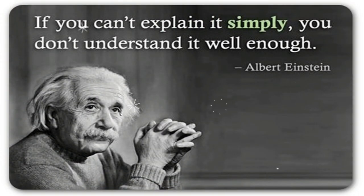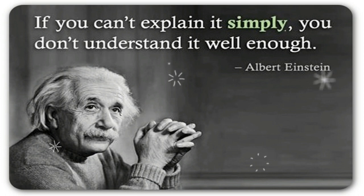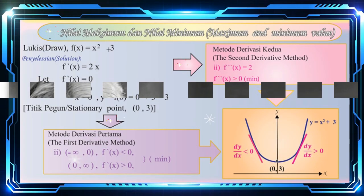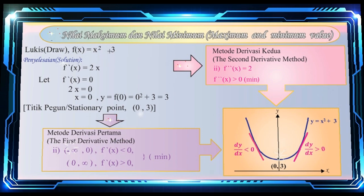As Albert Einstein's quote says: 'If you can't explain it simply, you don't understand it well enough.' For example, in calculus, in order to determine the maximum or minimum point, we have two methods. The second derivative method is simpler than the first derivative method. Therefore, the second derivative method is recommended in the world mathematics curriculum.